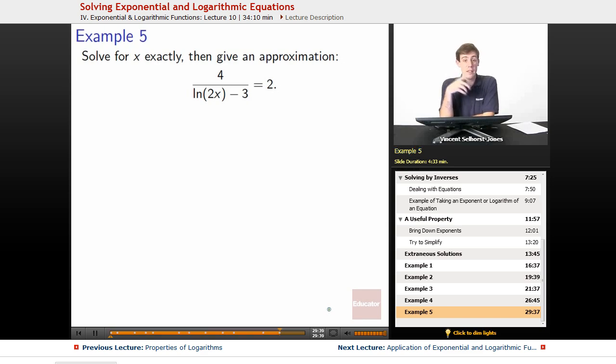We'll solve for x exactly, then give an approximation. So we've got the x that we're looking for is in the denominator. We don't like things stuck in the denominator, so let's multiply it on both sides. So we multiply by the natural log of 2x minus 3 on both sides. So we get 4 equals 2 times natural log of 2x minus 3.